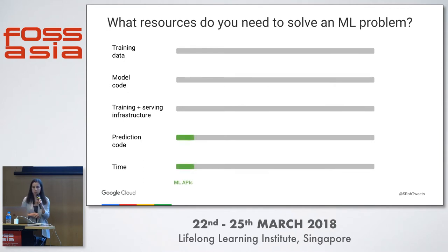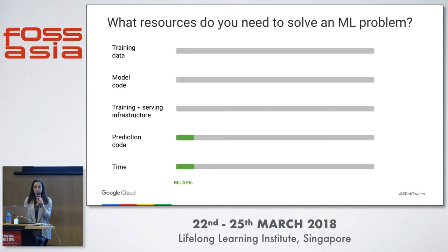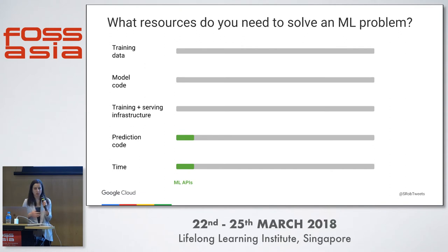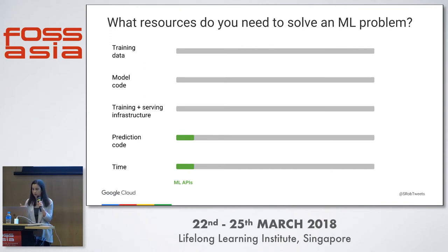When deciding which type of product to use, you need to think about the resources involved. For machine learning APIs, you don't need to provide any training data — you can just pass it one image and get a prediction back. You don't need to write any model code, and you don't need to provision any training or serving infrastructure. You just need to write a couple lines of code to generate your prediction, and you can get something up and running within probably a day.